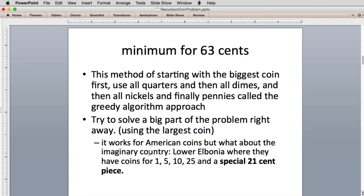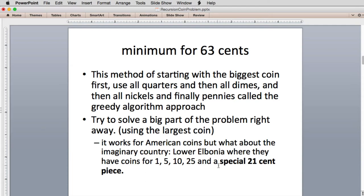But if we introduce a different set of coins, we have an imaginary country called Lower Albania where they have a special 21 cent piece in addition to the regular penny, nickel, dime, and 25 cent piece. If we're solving this problem, there's actually a better solution than six coins. You can choose three 21 cent pieces that equal exactly 63 cents. It's much better, but the greedy algorithm would not find that solution. It would still try two 25 cent pieces, have 13 cents left, and then it wouldn't ever use the 21 cent piece. So what kind of algorithm would use the 21 cent piece?